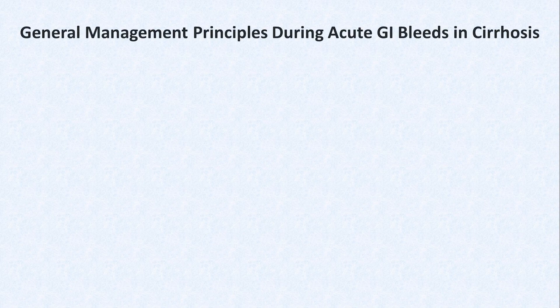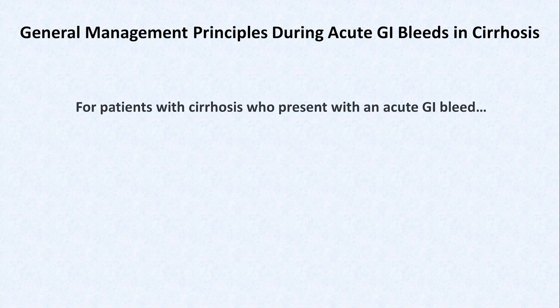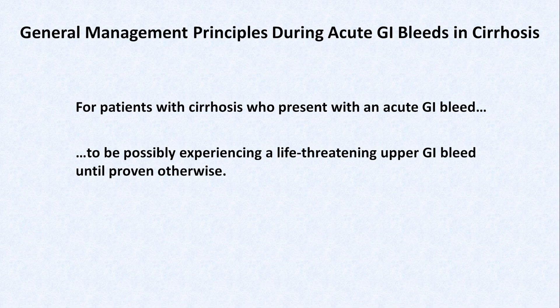So now, what happens if a patient with cirrhosis actually presents with an apparent upper GI bleed? To know if it's from varices will require an EGD, which will take some time to set up. So before focusing on varix-specific treatment, let's discuss some general management principles for any cirrhosis patient presenting with an acute bleed. The single most important principle is to consider that all such patients may be possibly experiencing a life-threatening upper GI bleed until proven otherwise, regardless of whether the patient is presenting with hematemesis, melena, or hematochezia, regardless of whether the volume is small or large, or whether the patient is hemodynamically stable or not.